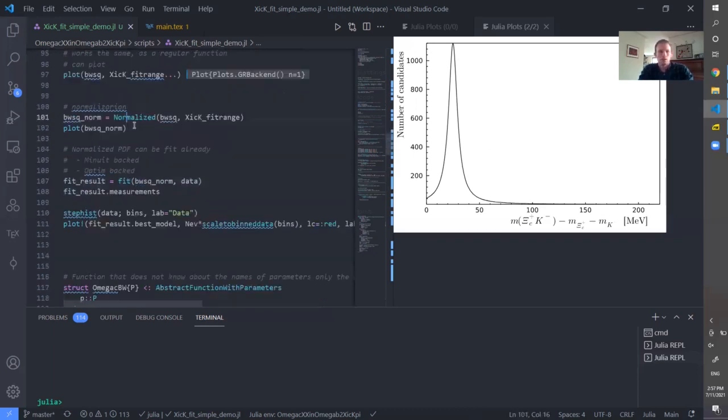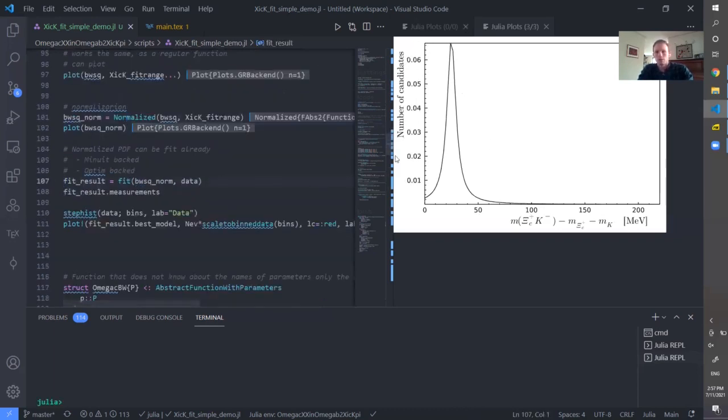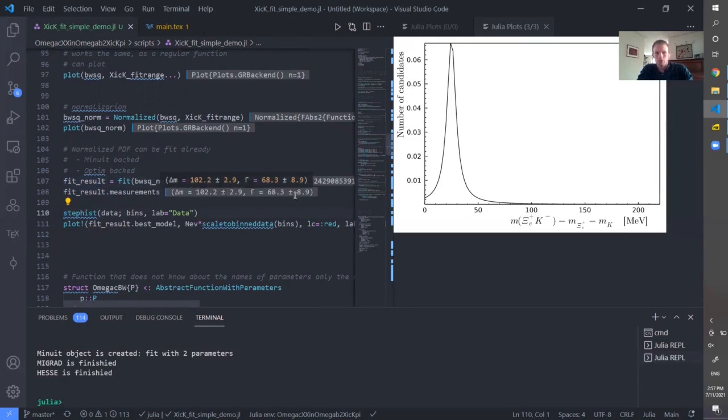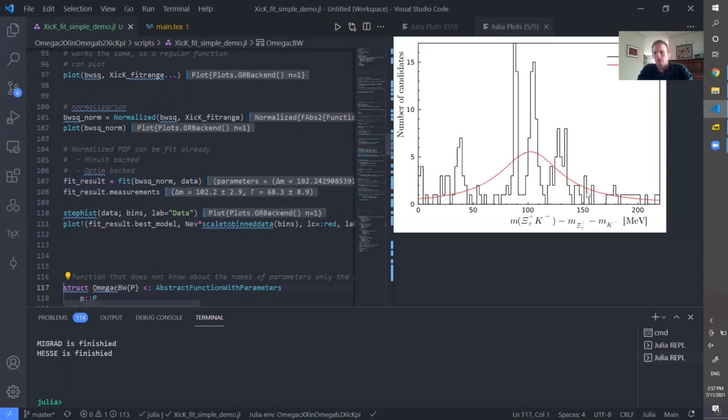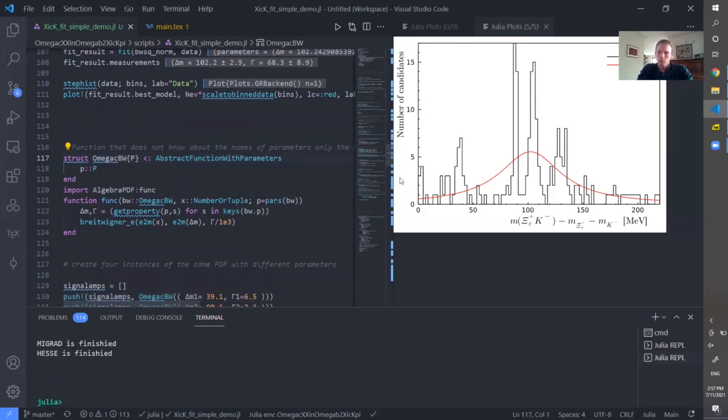It's not yet normalized. It's not PDF. Once we normalize, the integral becomes one. Already this PDF can be tried, can be fitted to the data. And although we get some reasonable error bars to the value of the mass and widths, the fit is not sensible with one component.